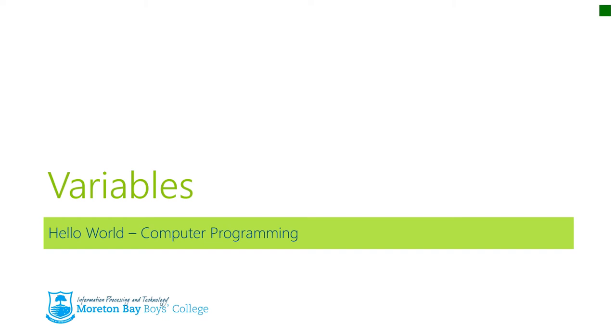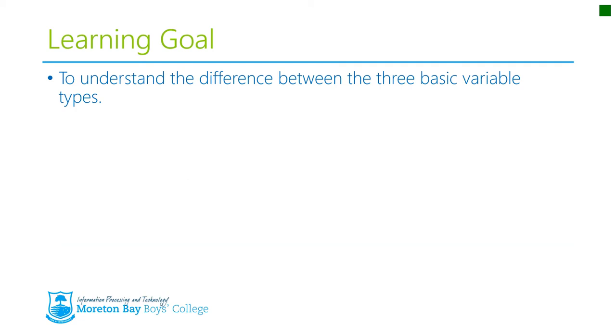Hi guys, so this is a short video that's going to explain the three different types of variables, basic variables we're going to be using with our programming. The learning goal for this video is to understand the difference between the three basic variable types.